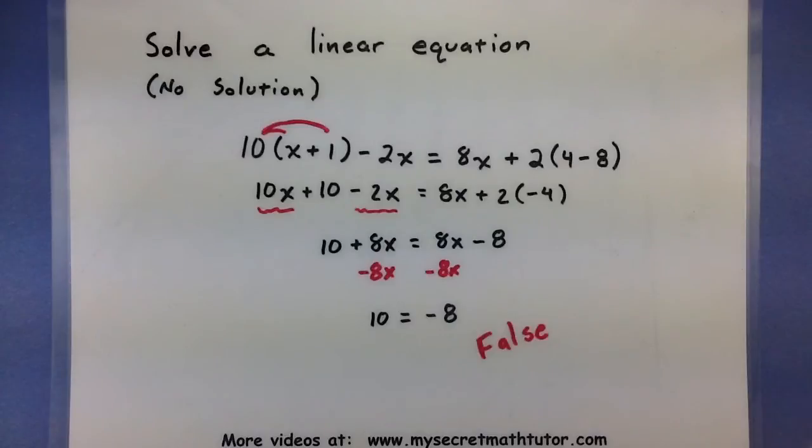Another thing that you could call this equation is you could call it a contradiction. It means that no matter what value you plug in for x, this equation will never be true. So be on the watch out for those false statements to come up. If they do, check your work first. And if it all looks fine, then you know you have no solution.